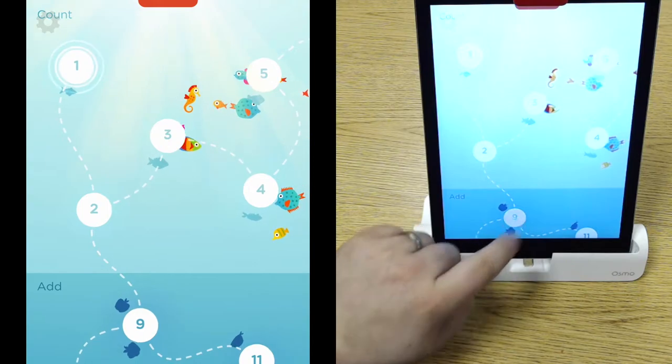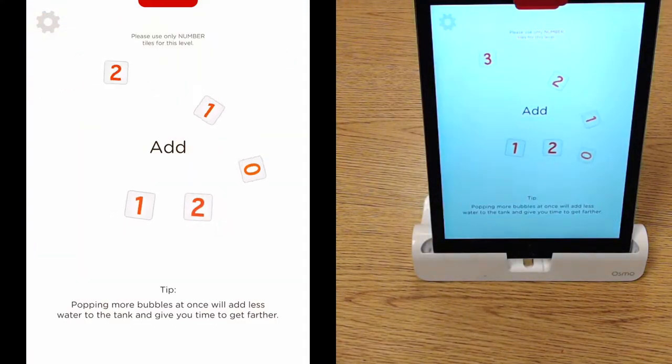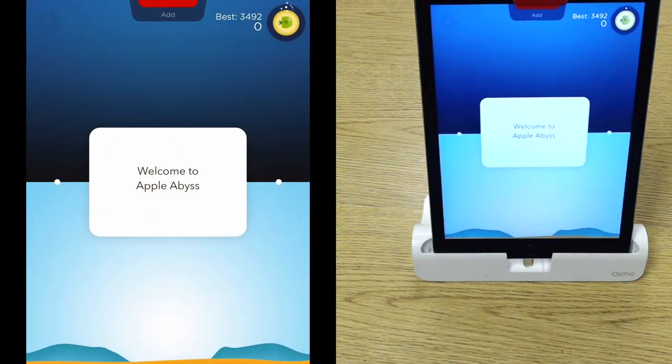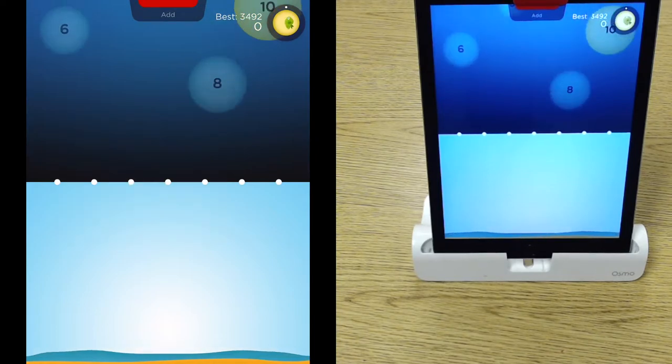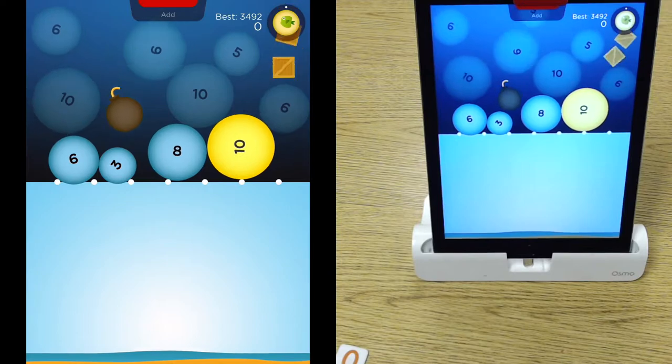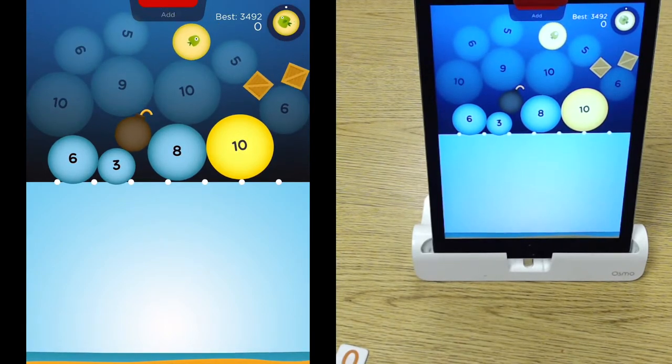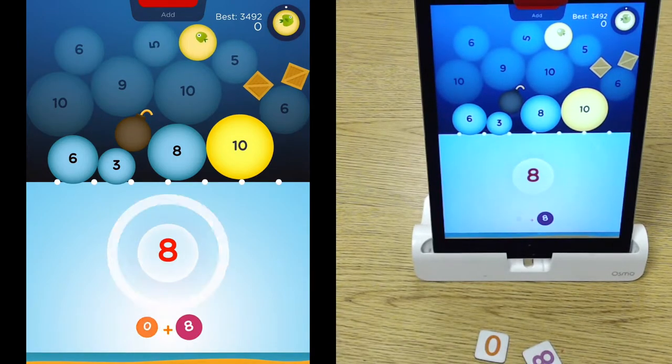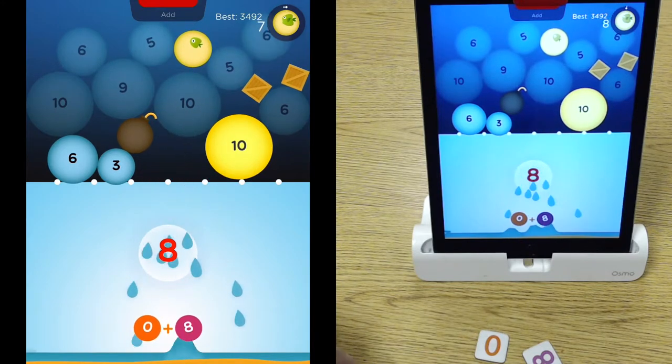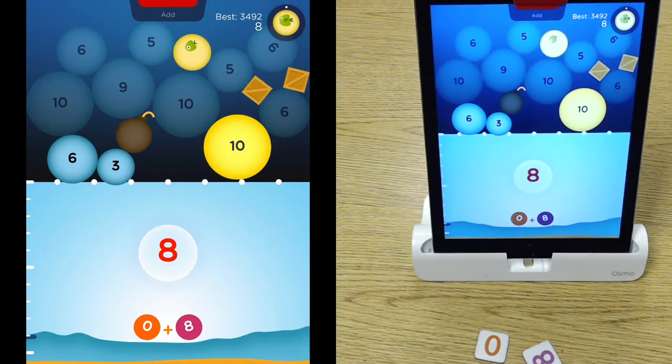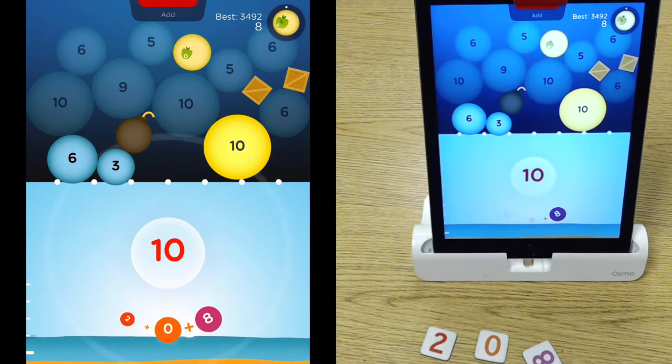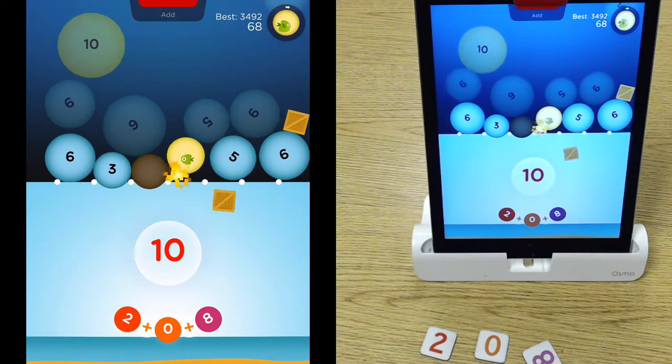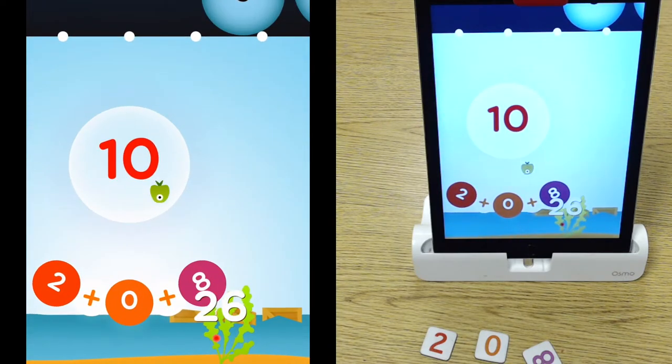Let's take a look at adding. So on the very top it says place only number tiles. So I've got my number tiles out. And I'm going to do zero and eight. Zero plus eight equals eight. And I can also do zero plus eight plus two.